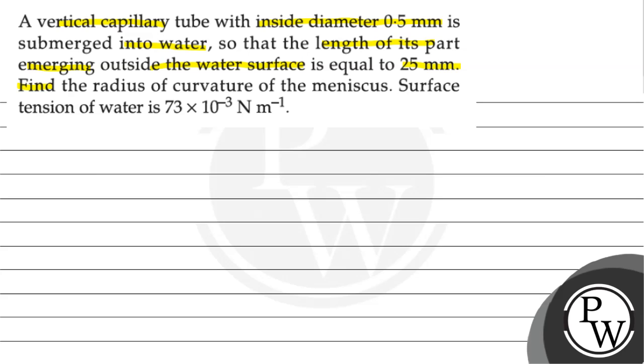Find the radius of curvature of the meniscus. Given surface tension of water is 73 multiplied by 10 to the power minus 3 Newton per meter.